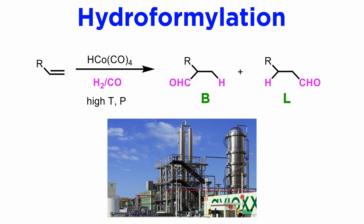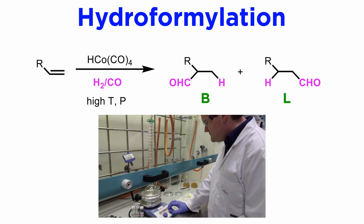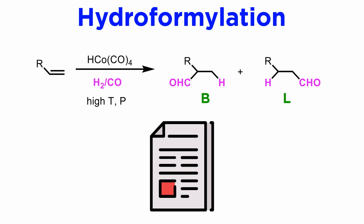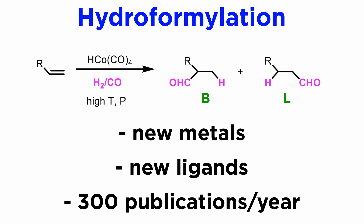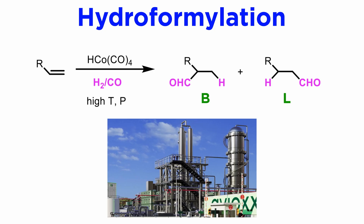In summary, hydroformylation is one of the most important processes in the chemical industry, and it is also attracting the attention of synthetic chemists, in particular those who are keen to apply enantioselective methodology to the synthesis of valuable chiral intermediates. This is still an area of current research, and new results are reported with remarkable frequency. New metals are being applied to the reaction, as well as new ligands. The number of publications in this area has reached around 300 per year, and there are multi-volume books dedicated to this topic. Thus, hydroformylation, especially due to its industrial applications, is still a huge research field.